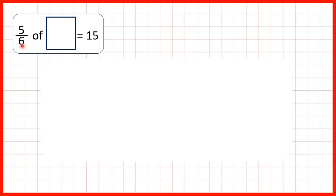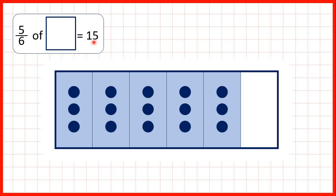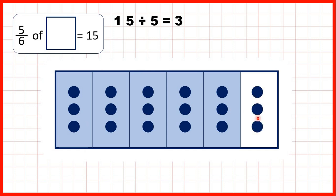Then we knew that five-sixths of something was 15. We can show a fraction bar split into sixths with 5 sixths highlighted. We know 15 is in those 5 sixths, so we divided 15 by 5 and found there must be 3 counters in each sixth — including the remaining sixth. We took that 3 and multiplied by 6 because there are 3 counters in each of our 6 sixths, giving us 18 as our total quantity.